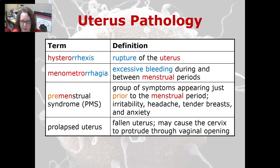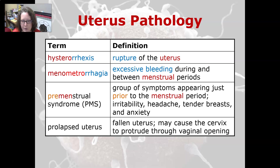Premenstrual syndrome is a group of symptoms appearing prior to the menstrual period that include irritability, headache, tender breasts, and anxiety. A prolapsed uterus is a fallen uterus — it may cause the cervix to protrude through the vaginal opening.